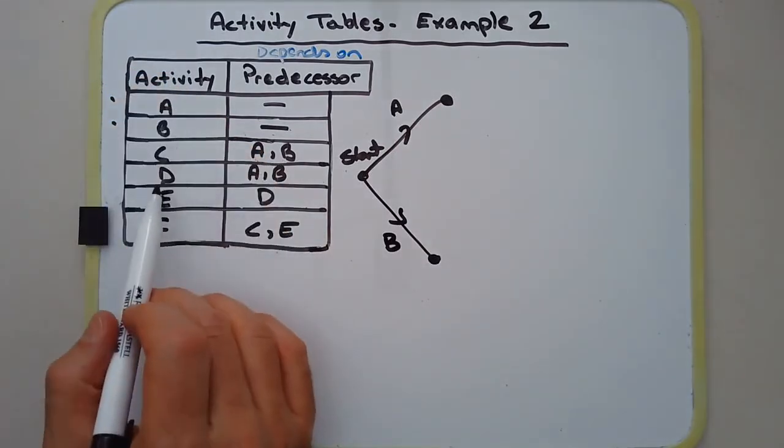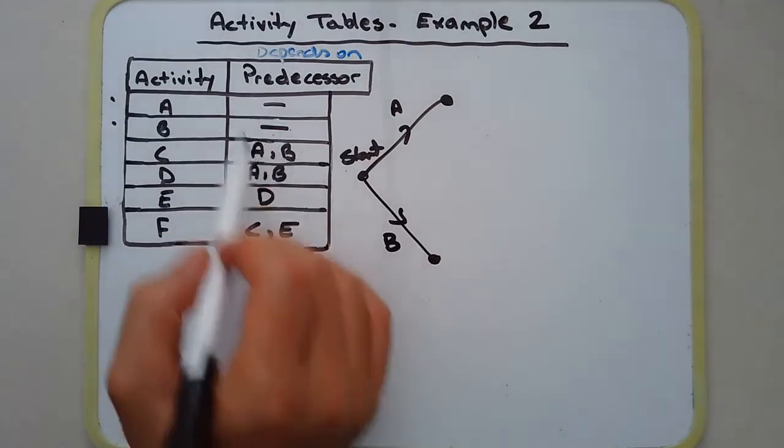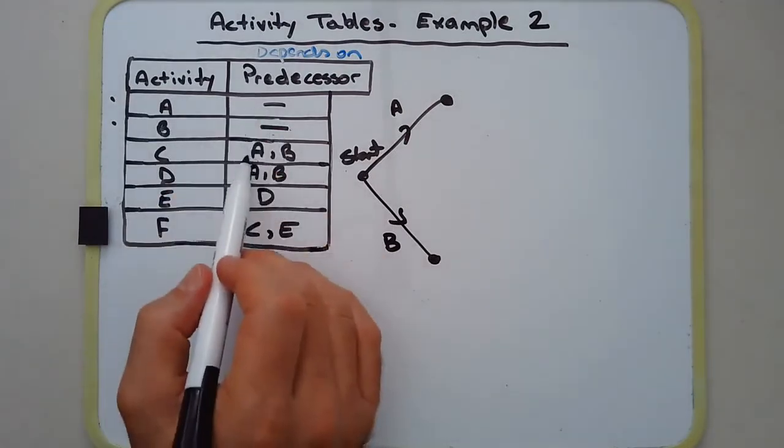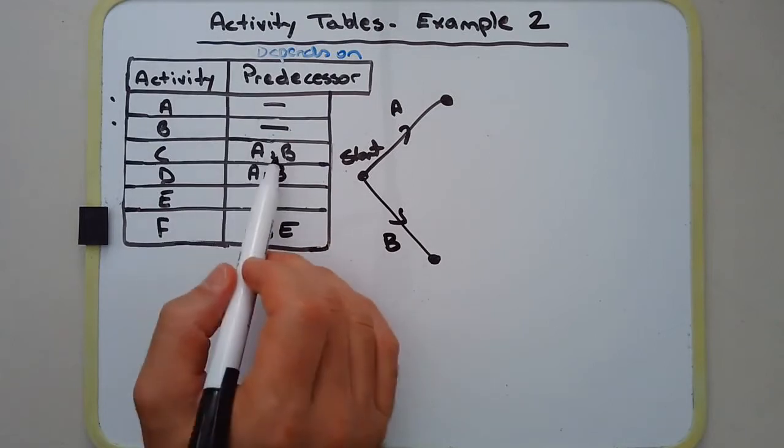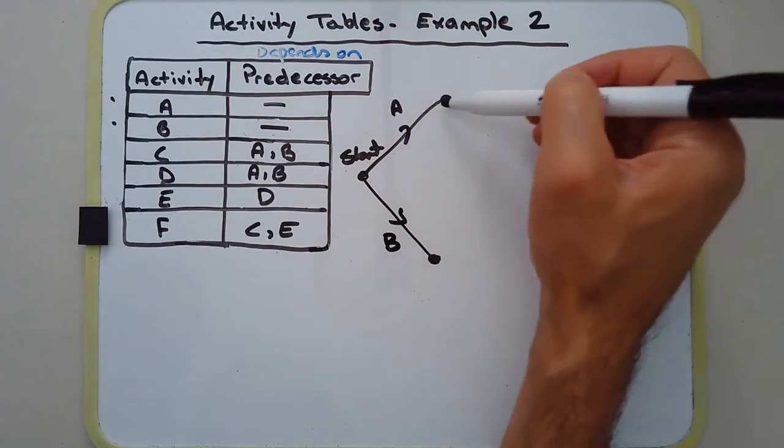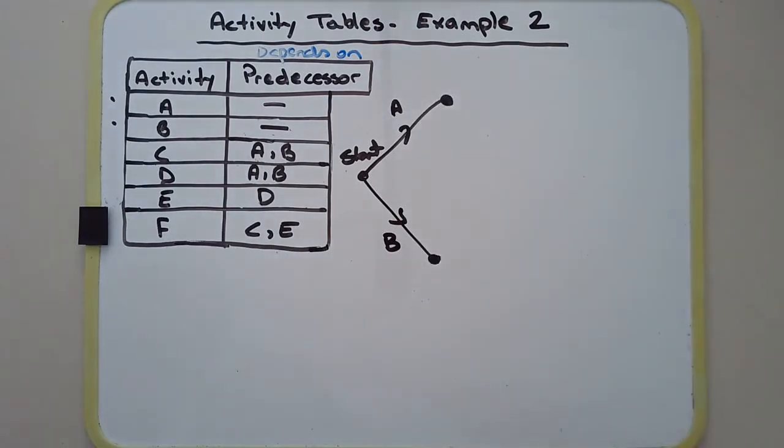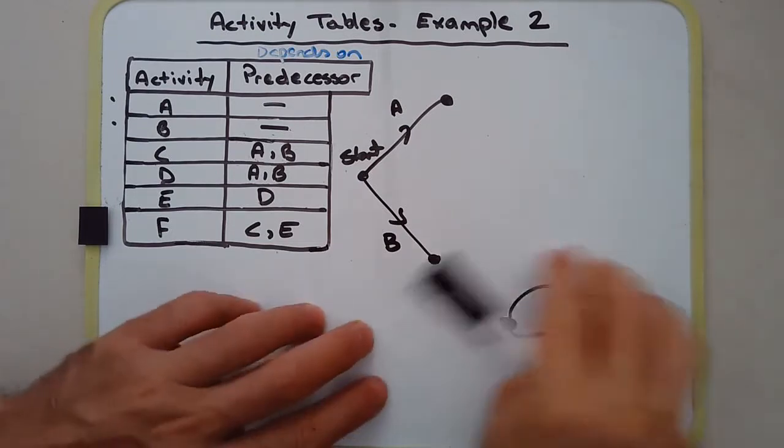Now activities C and D depend on A and B being completed. Okay, so what you'll notice is that in the predecessor column if you have two vertices listed in one row it means that they somehow have to join together. Now we can't have A joining onto B directly because that would create a multiple edge. We're not allowed to do that. Remember we can't have this sort of situation where you have two vertices basically connected via multiple edges. Okay, so that's not allowed.